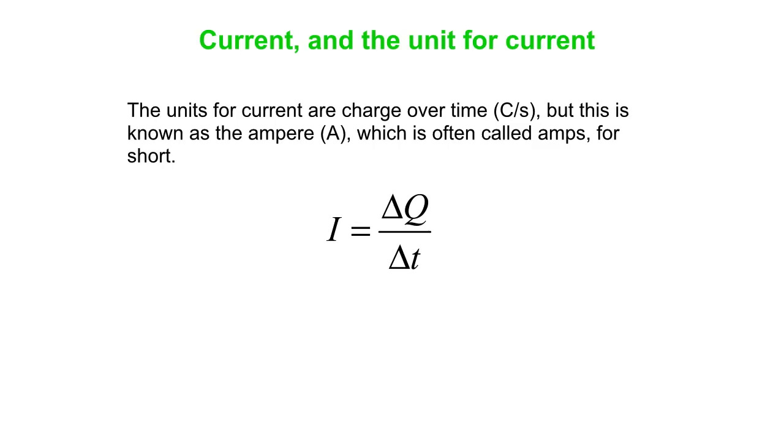So let's start with current. The units for current are charge over time, coulombs per second. This is known as the ampere, or capital A, which is often referred to as amps. So our equation is current I is delta Q over delta T, Q being charge, T being time.